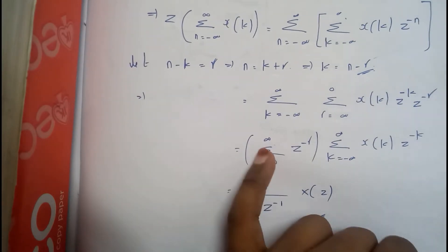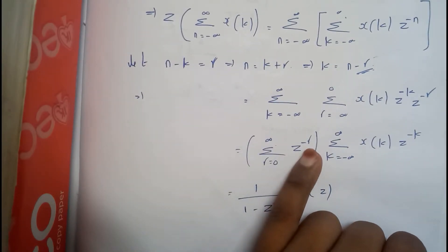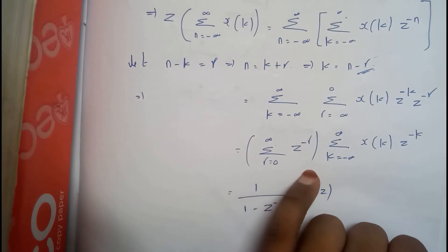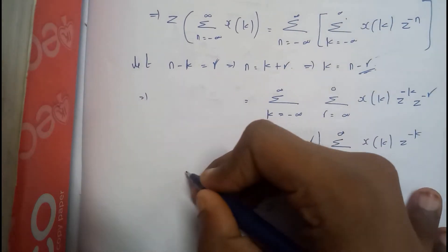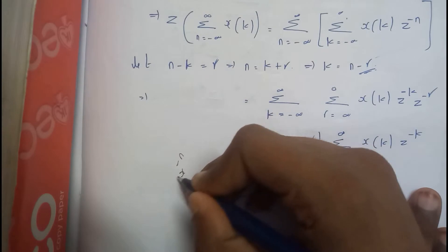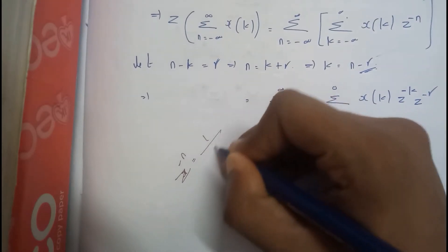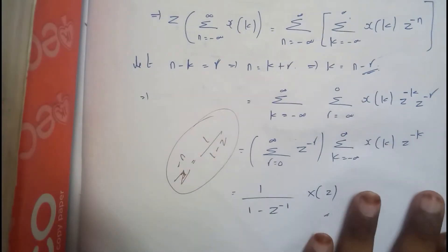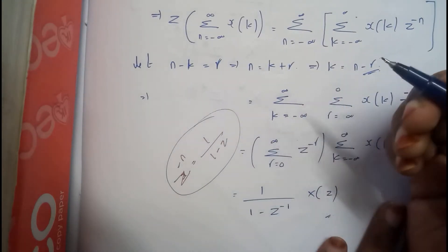So sigma r equals 0 to infinity, z to the power of r. I think everyone has an idea about this formula which I discussed previously. z to the power of minus n is nothing but 1/(1 - z). This is the formula.